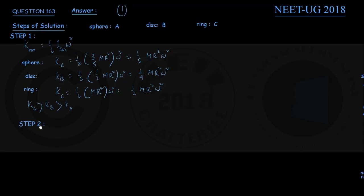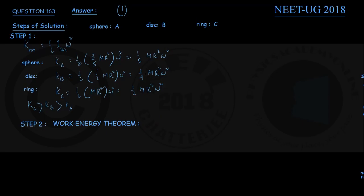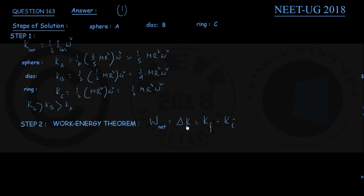For step 2, we recall the work-energy theorem: the net work done on a body equals the change in kinetic energy, that is K_final minus K_initial. In our case we use the rotational analog: the net work done on a rotating body equals the change in its rotational kinetic energy.